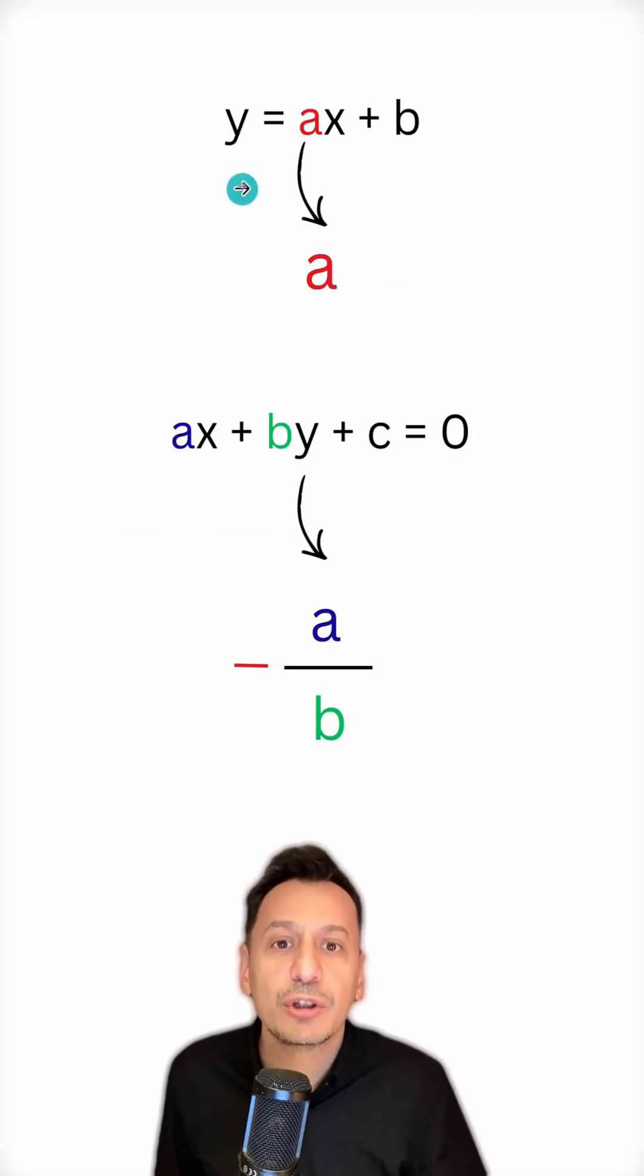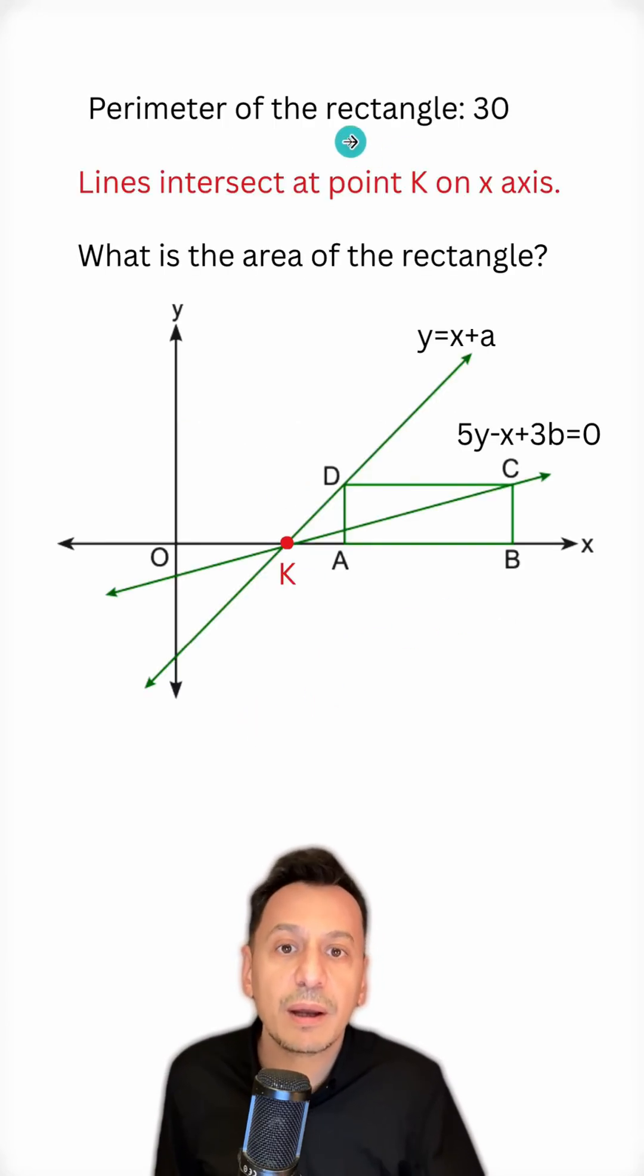One of these is the equation of a line. If it's given to me in the form y equals ax plus b, the coefficient of x here gives me the slope. If the equation of the line is given to me in the form ax plus by plus c equals 0, I find the slope like this. I divide the coefficient of x by the coefficient of y and take the negative of that.